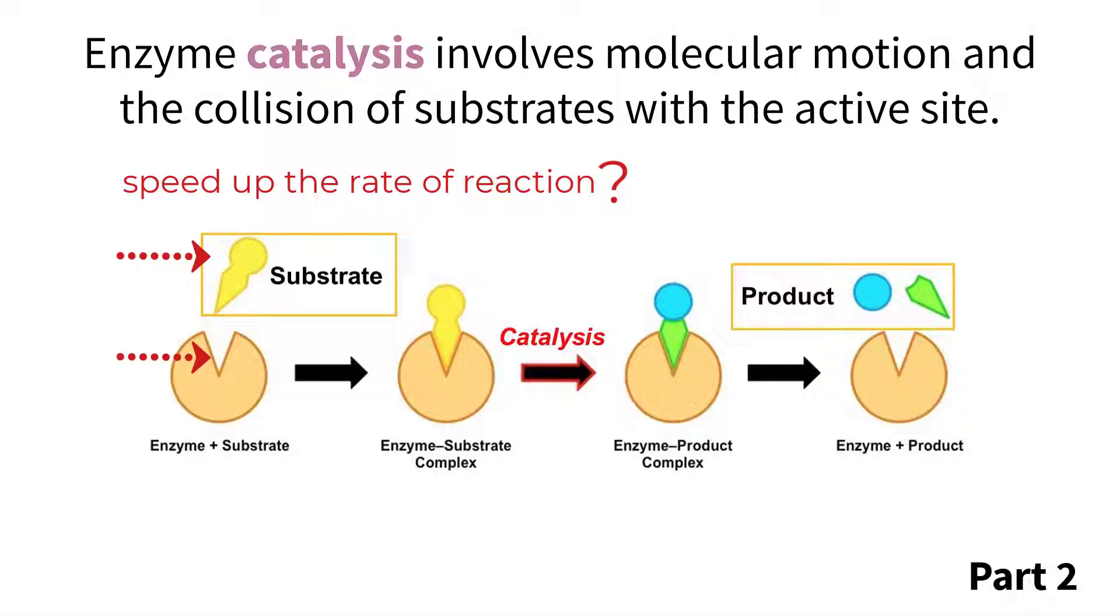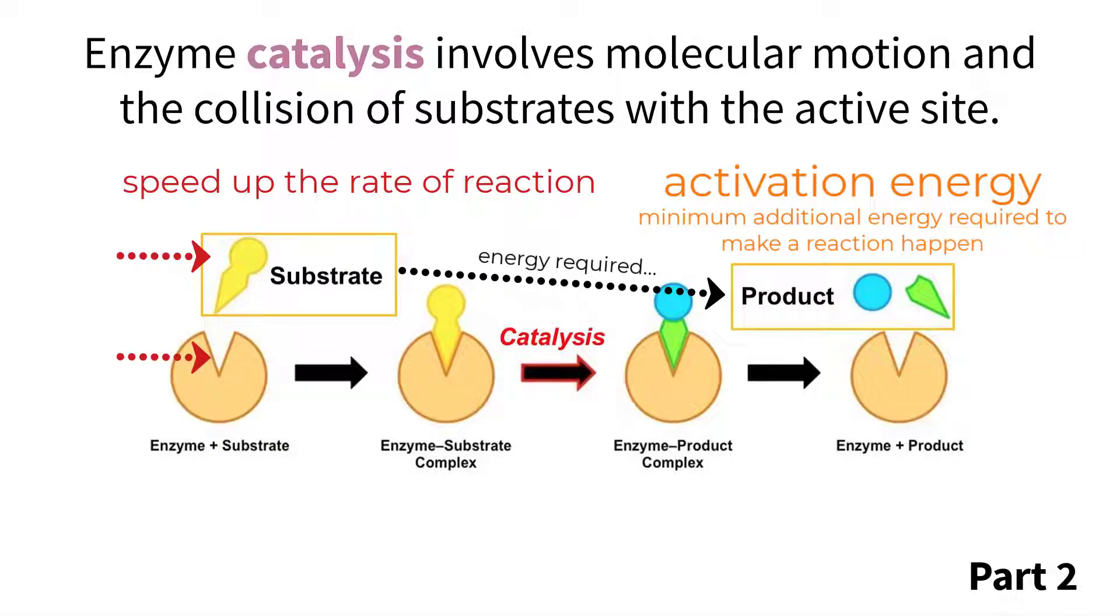Well, to understand that we need to talk about something called activation energy. Chemical reactions don't just happen because they want to. In order for a reacting molecule to be converted into a product, it takes a specific amount of energy, and the minimum amount of additional energy required to make a reaction happen is called the activation energy. Now there are cases of chemical reactions that need to happen in the body that have a high activation energy, so in order to ensure the reaction takes place, the enzyme can be utilized to lower the activation energy of the reaction.